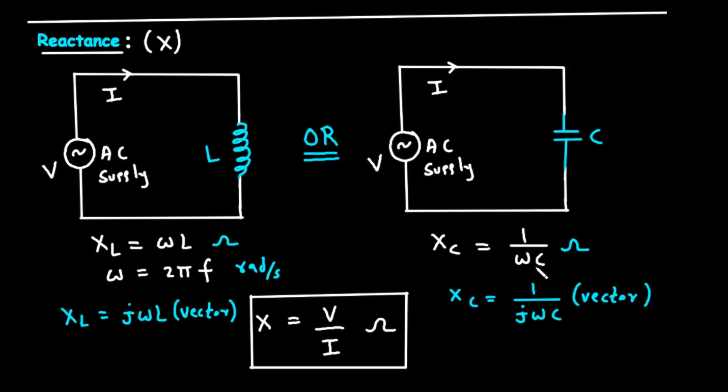Notice that this relationship is inverse. This means the capacitive reactance decreases as the frequency or the capacitance increases. This is the exact opposite of an inductor. High frequencies pass through a capacitor more easily.